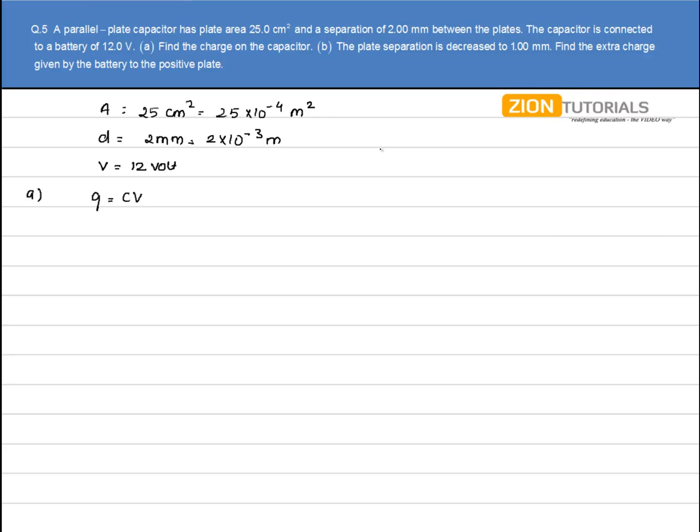Students are often confused whether the formula is Q = CV, C = QV, or V = QC. Here's a tip to remember: let Q stand for question and CV stand for CV Raman.